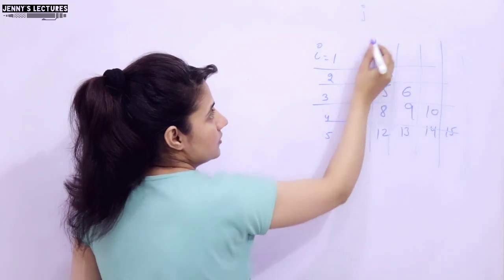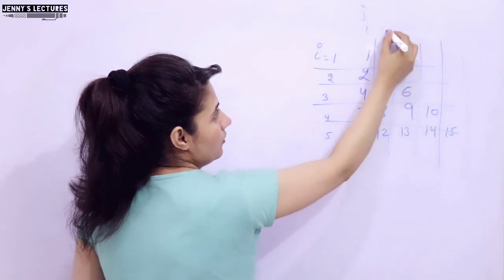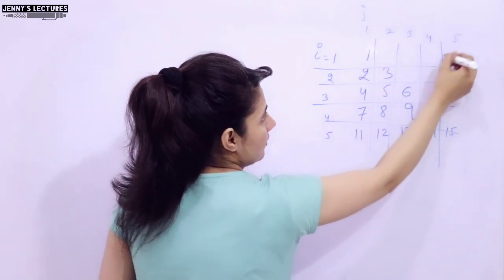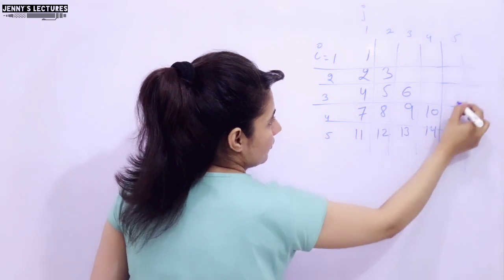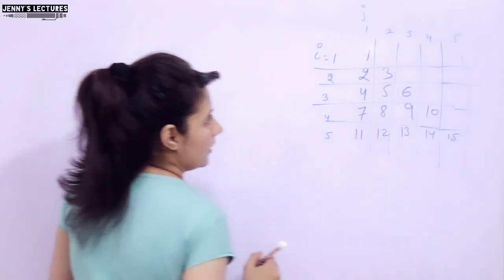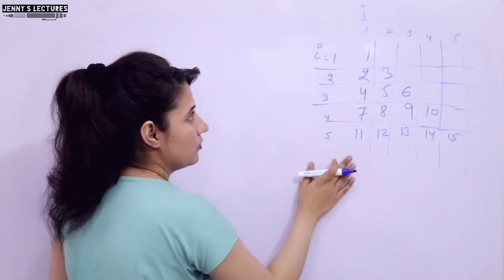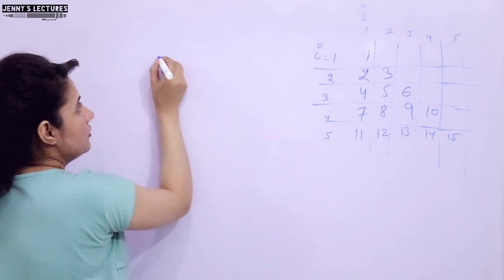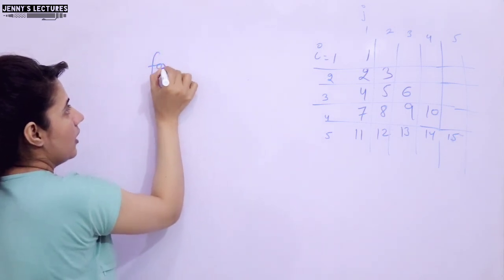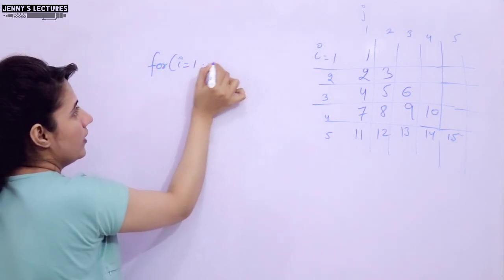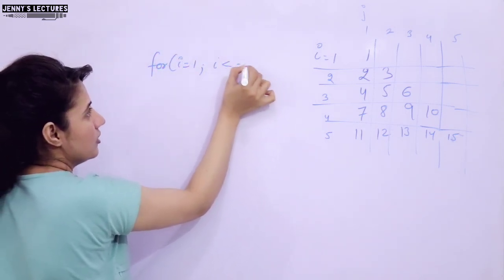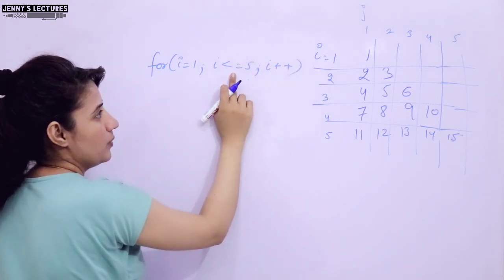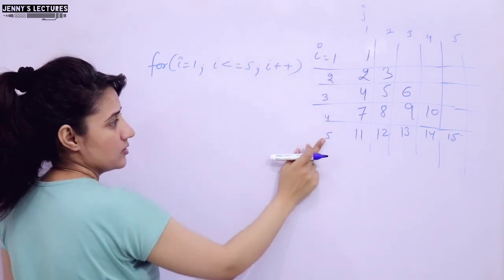J is the inner loop variable. J is equal to 1, then 2, then 3, then 4, then 5. Now let's see how to write down the logic. The outer loop: I is equal to 1 and I less than equal to 5. That's it, because it is to print the number of lines — 5 lines.